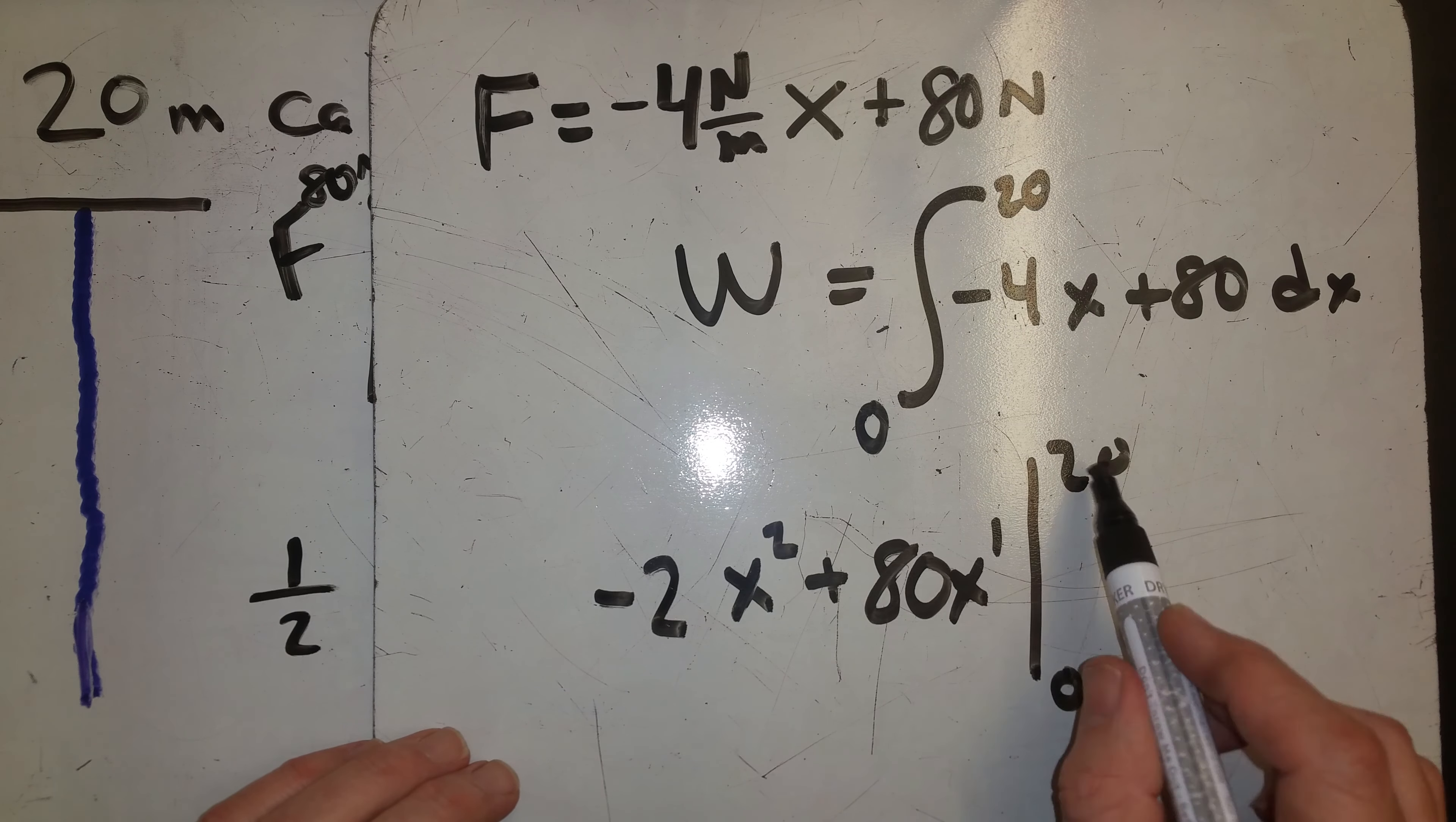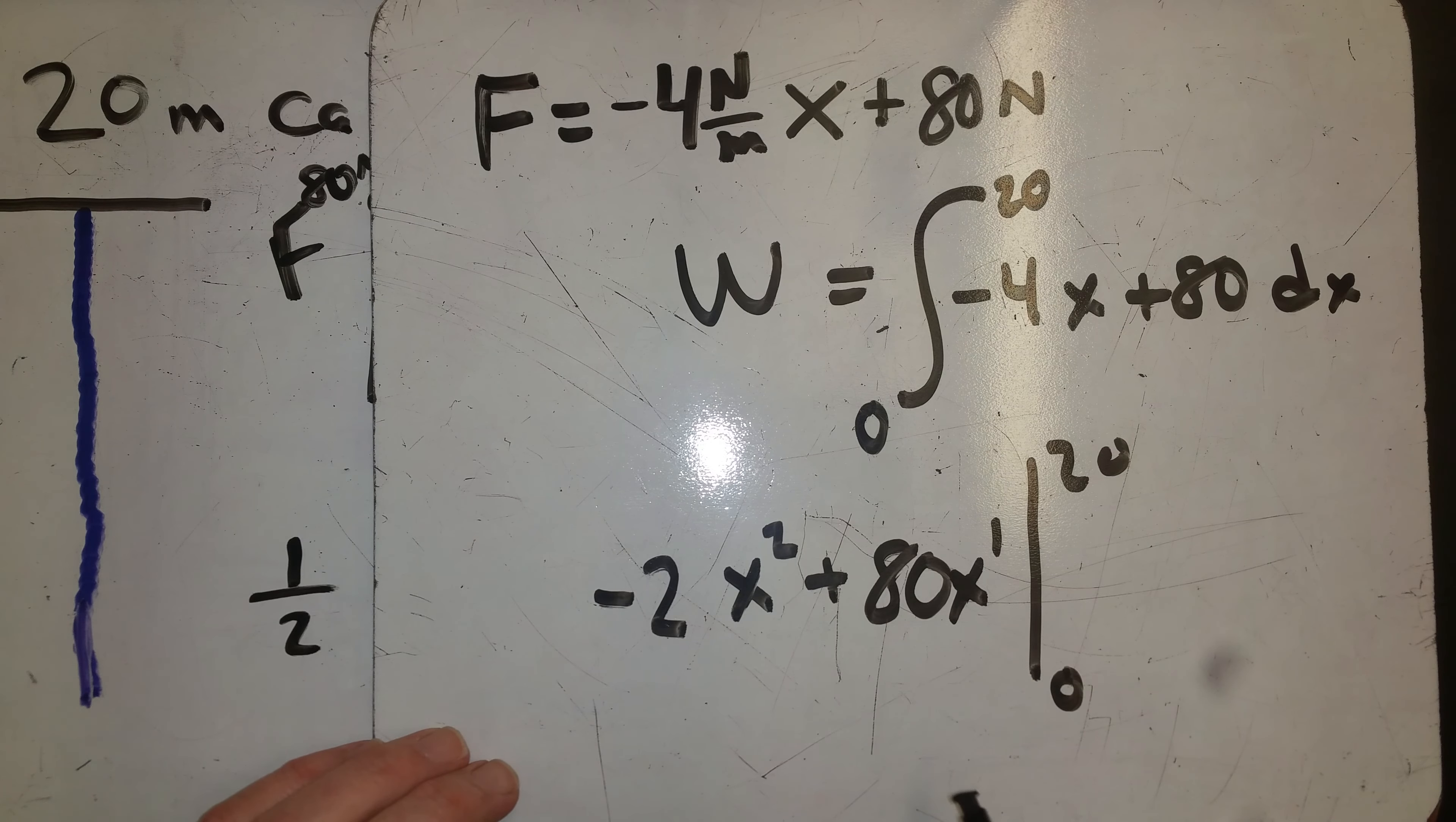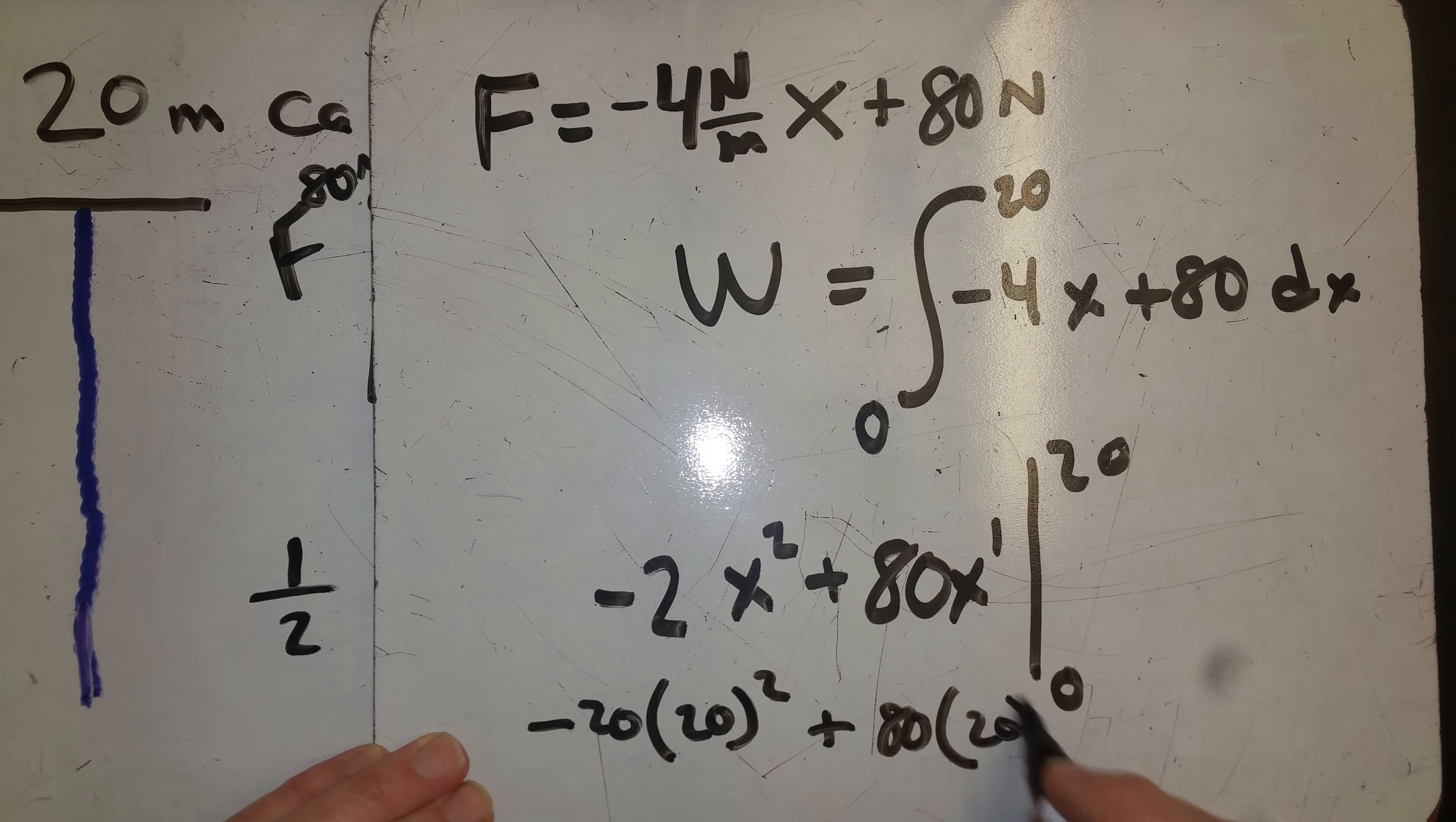We just plug in 0, this piece disappears because there's x in all terms, so all we have to address is the 20. So negative 20 times 20 squared plus 80 times 20, or 400, I'm sorry, negative 2.